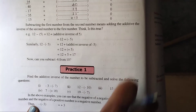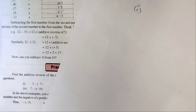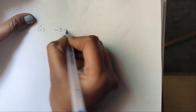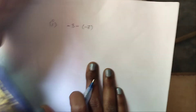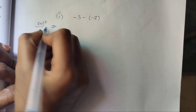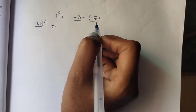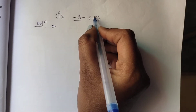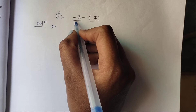Question 1: minus 3 minus 7. Find the additive inverse of the number to be subtracted. So, minus 7 is subtracted from minus 3.